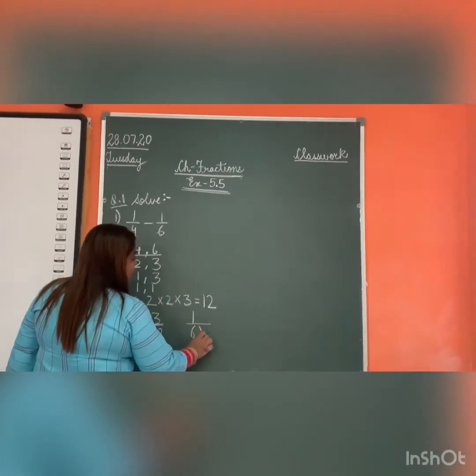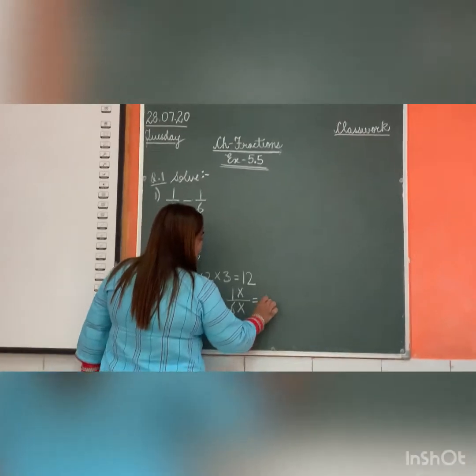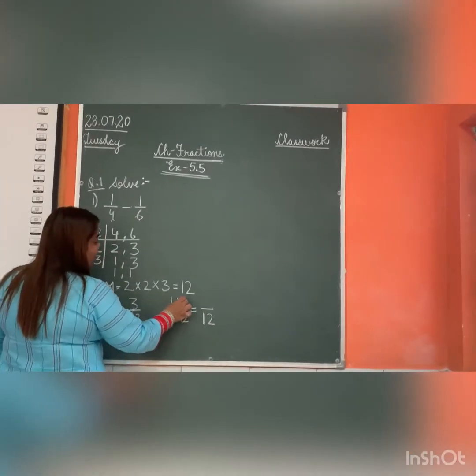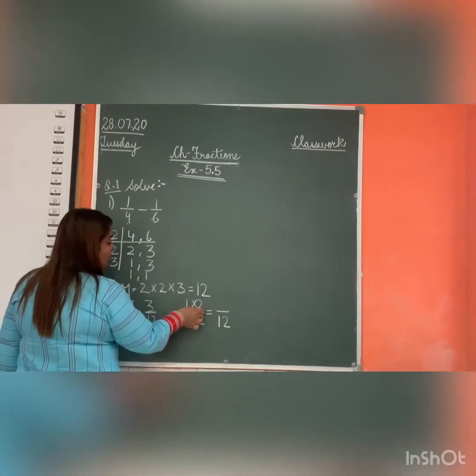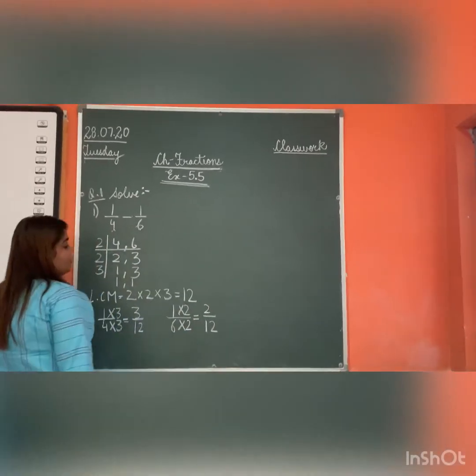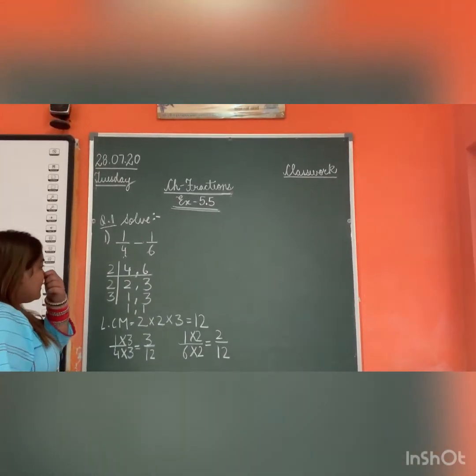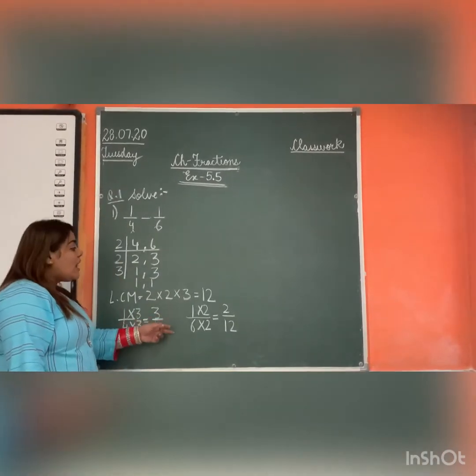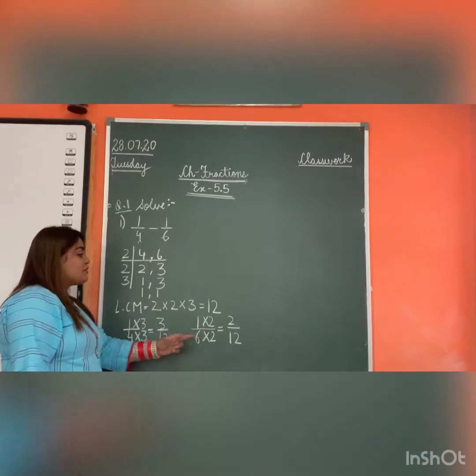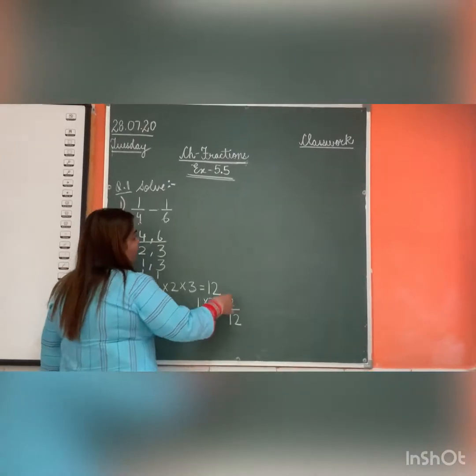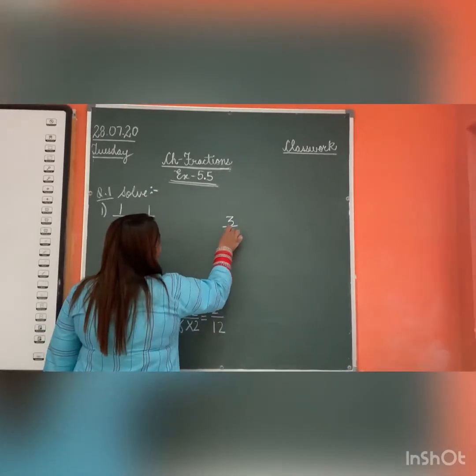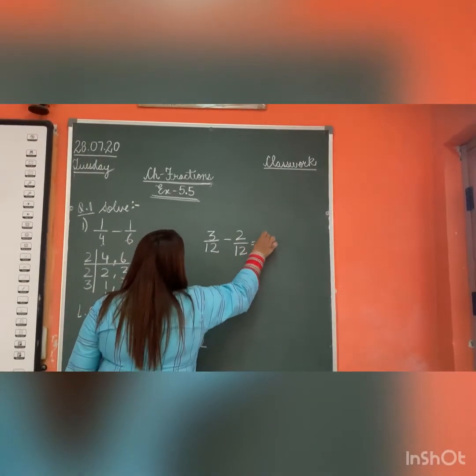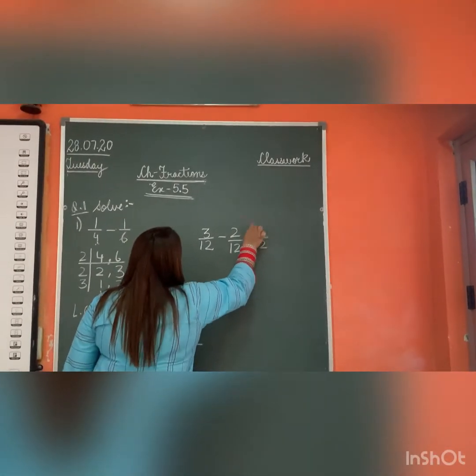Now 1 by 6. 6 into 12. Niche 2 into 12. So hame yaha kya karna hai? Subtract. 3 by 12 minus 2 by 12. The answer is 1 by 12. Is it clear?